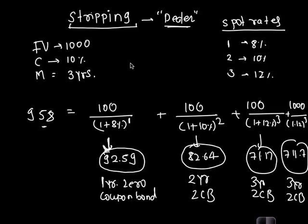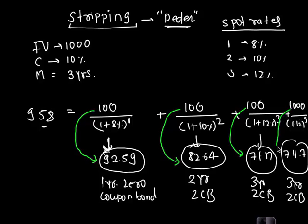At the end of year one, the 100 coupon received is used to pay off the first bondholder. Year two's coupon pays off the second bondholder, year three's coupon pays off the third bondholder, and the principal repayment pays off the fourth bondholder. You've converted a regular coupon bond into multiple zero coupon bonds. The first three bonds are referred to as C-strips or coupon strips, and the last one is the principal strip.